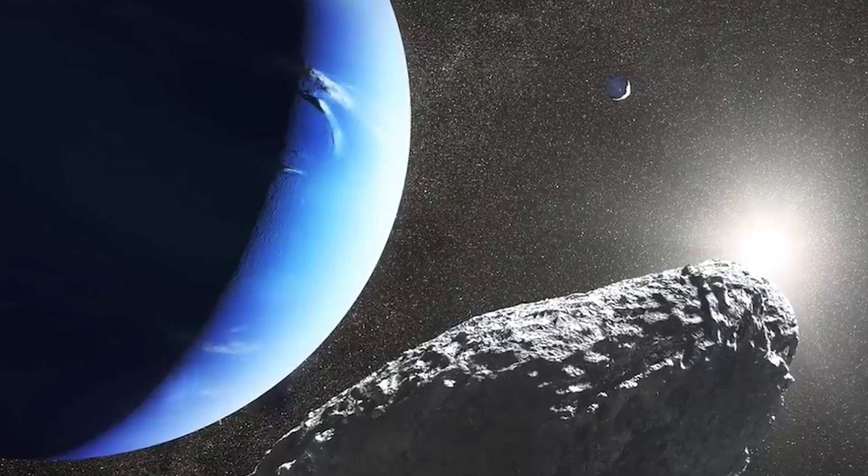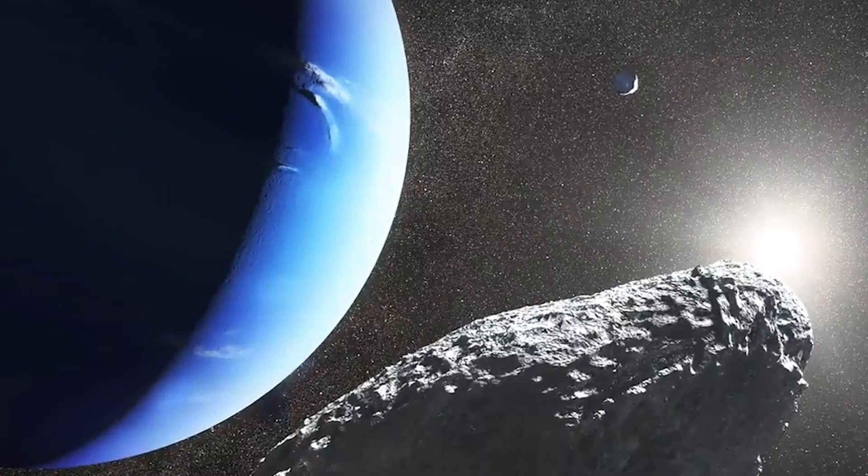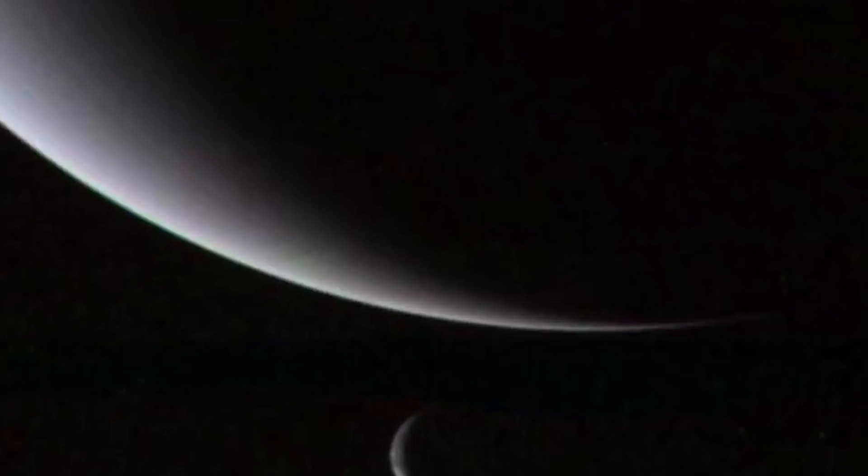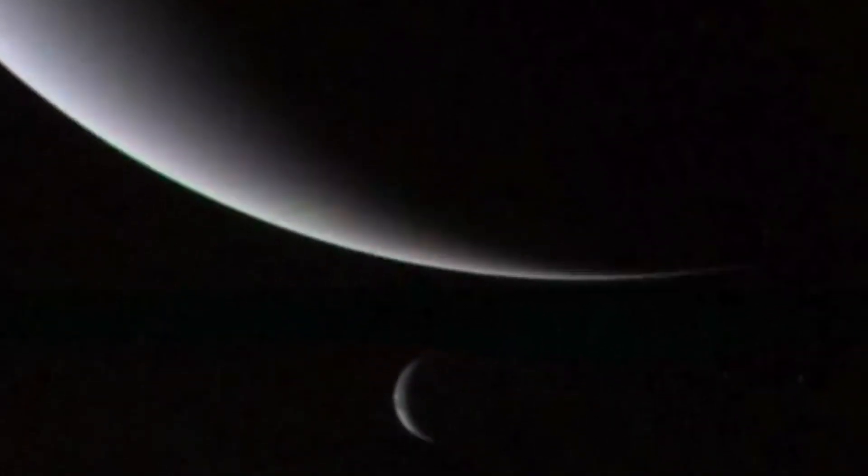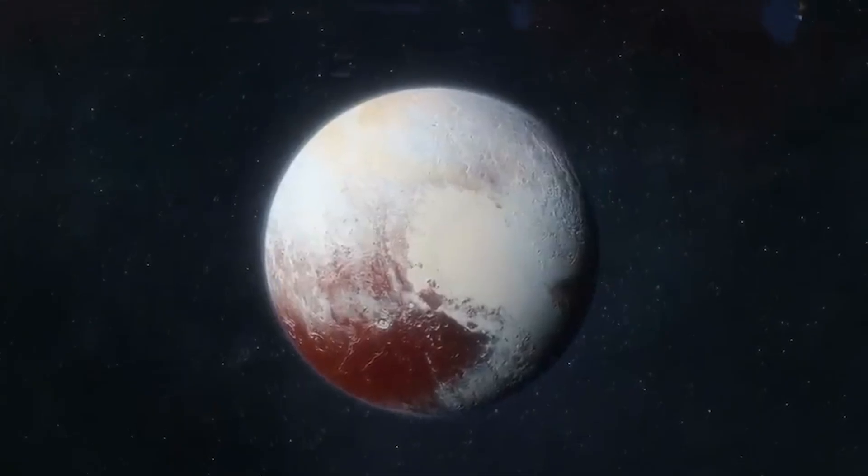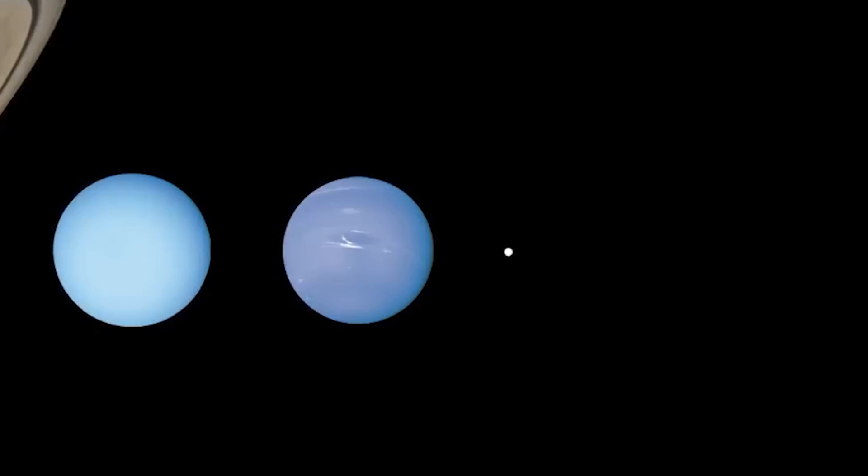In addition to creating resonances, Neptune's gravitational presence likely prevented a full-fledged planet from forming in the Kuiper Belt. Instead of coming together to form a large planet, the icy bodies in this region remain small and scattered. By controlling the dynamics of this region, Neptune has played a crucial role in maintaining the current structure of the solar system.